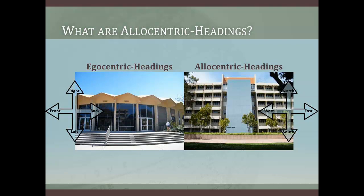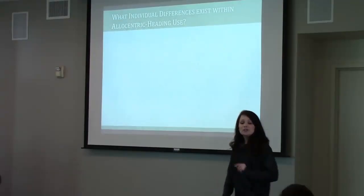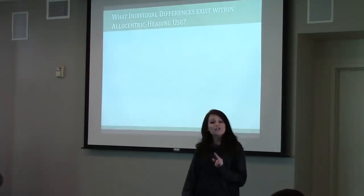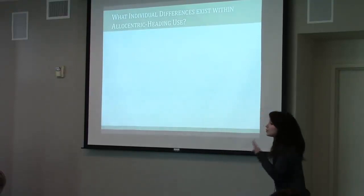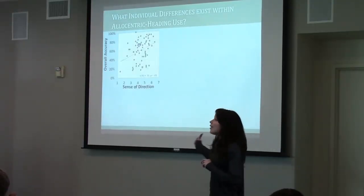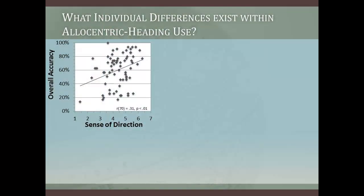My dissertation research has revealed three main results. Individuals differ in their ability to identify allocentric headings. Individuals differ in the strategies they use to conceptualize allocentric headings. And some strategies work better than others. If you have a good sense of direction, chances are you're really good at identifying allocentric headings — but if you have a poor sense of direction, chances are you struggle.